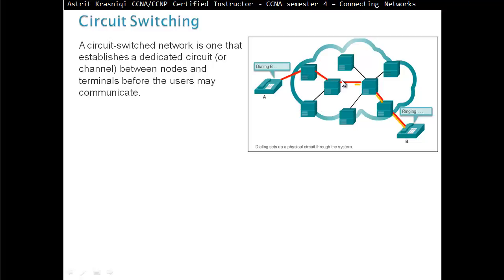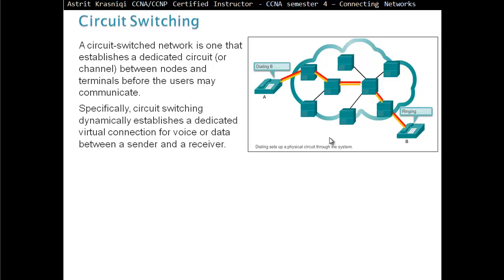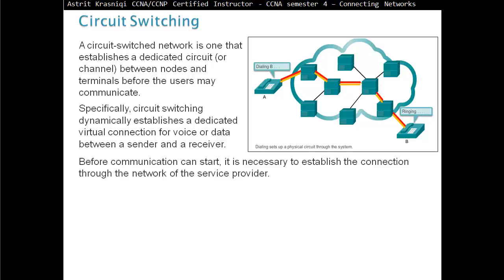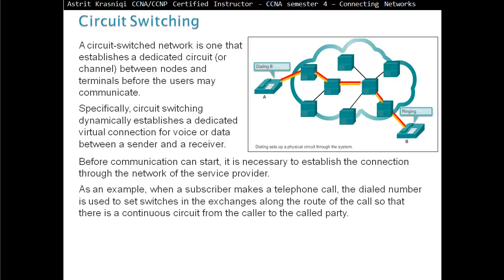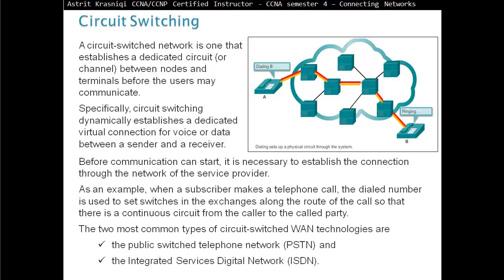But before you can transfer any data, the device has to ring the dial device. The other device has to ring. Then the connection has to be established. Then we can start transferring data. Specifically, circuit switching dynamically establishes a dedicated virtual connection for voice or data between a sender and receiver. Before communications can start, it is necessary to establish the connection through the network of the service provider. As an example, when a subscriber makes a telephone call, the dial number is used to set the switches in the exchange along the route of the call so that there is a continuous circuit from the caller to the called party. The two most common types of circuit switched WAN technologies are the public switched telephone network and integrated service digital network.